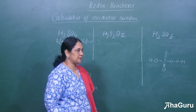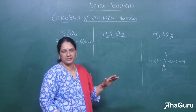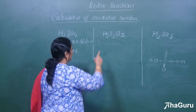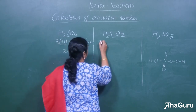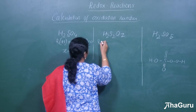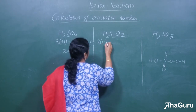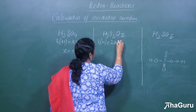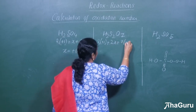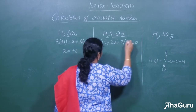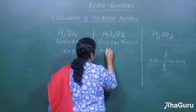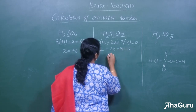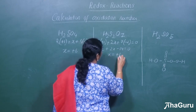Next, H2SO7 — this is fuming sulfuric acid, also called oleum. Here: 2 × (+1) for hydrogen, plus 2 sulfur atoms so 2x, plus 7 oxygen: 7 × (−2), all equal to 0. So: 2 + 2x − 14 = 0, giving x = +6. Again the oxidation number for sulfur is +6.